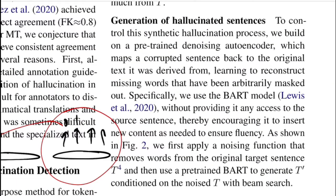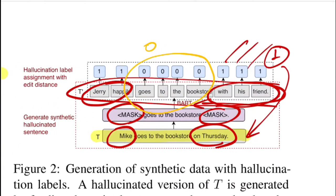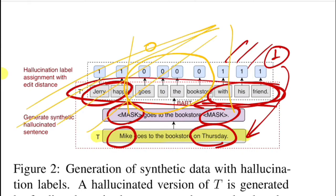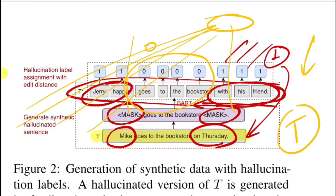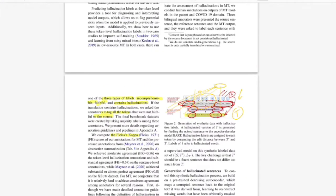They use BART without providing access to the source sentence, thereby encouraging it to insert new content as needed to ensure fluency. If the source sentence were included, the masked tokens would self-attend to source tokens, giving hints about what to generate and potentially not guaranteeing hallucinated text. By only providing the target sentence, the model has no prior information for the masked span and instead draws from its pre-training knowledge on large corpora, generating fluent text that is guaranteed to be hallucinated.